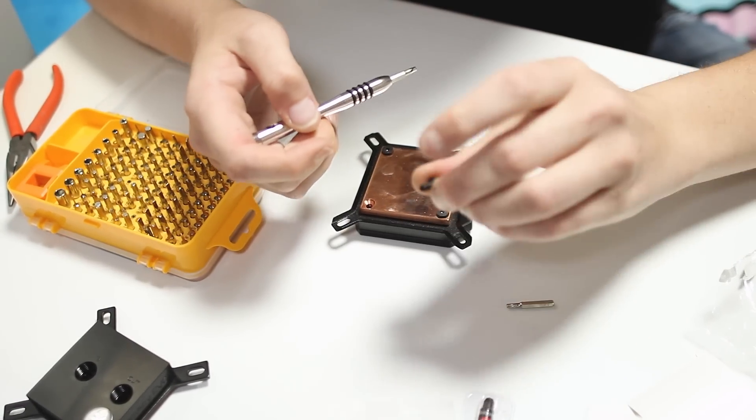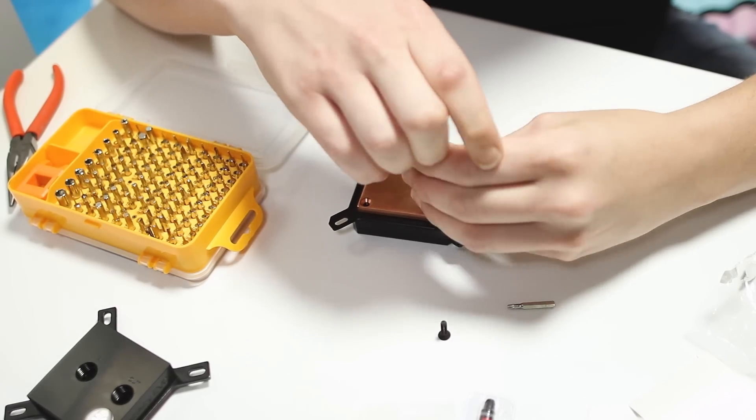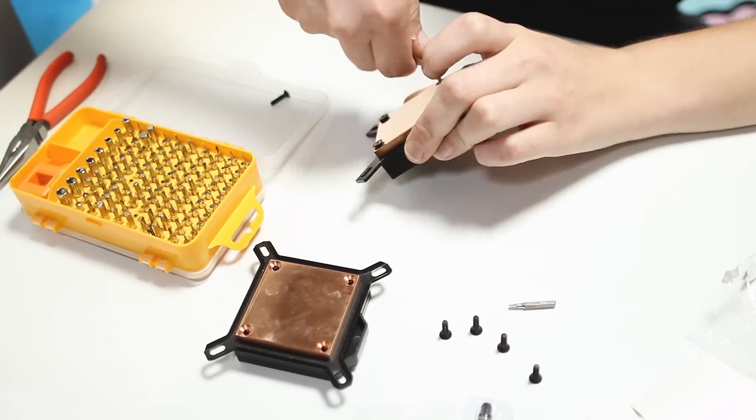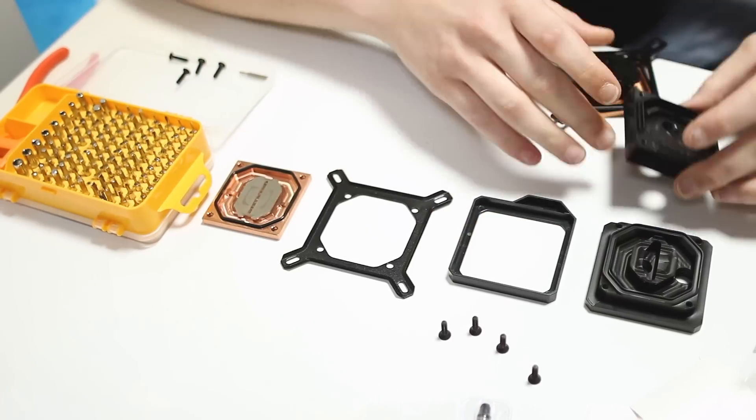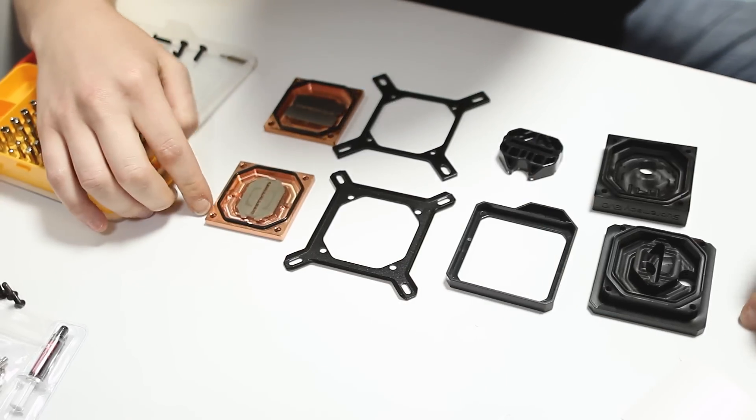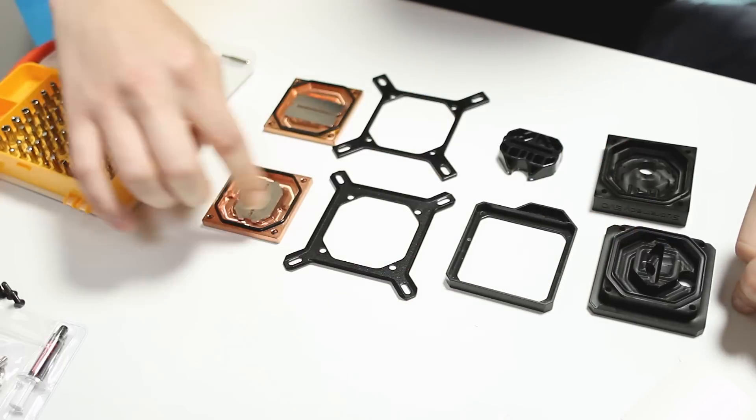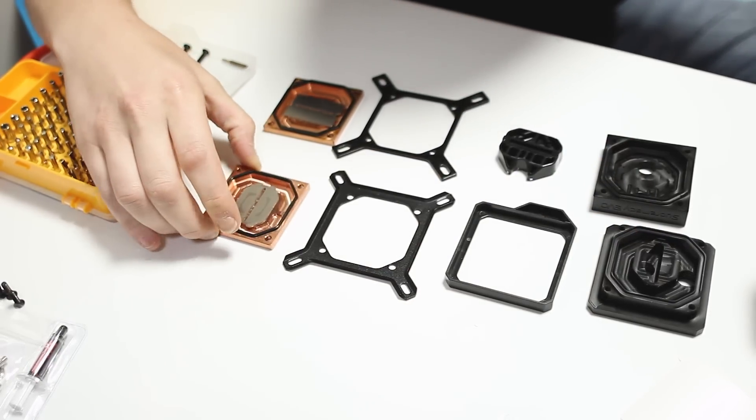No Loctite. They must have used a certain amount of torque on this to get it so tight. So this is the Velocity block here, and as we can see, it's basically the same. You have the water, the cold plate, the gasket.